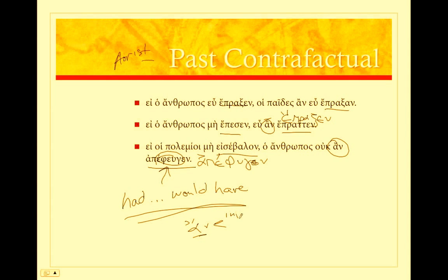If it's imperfect indicative, we've got a present contrafactual. And if it's aorist, we've got a past contrafactual.